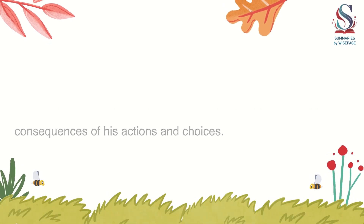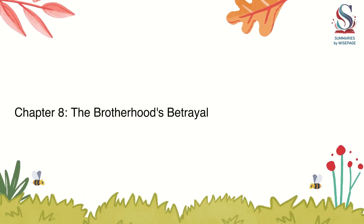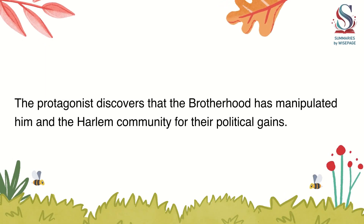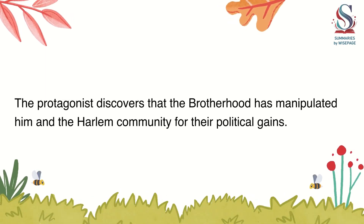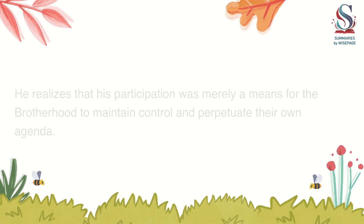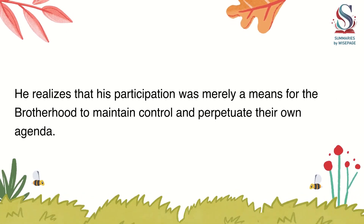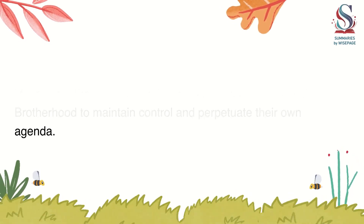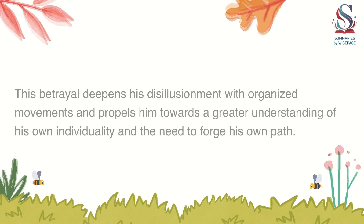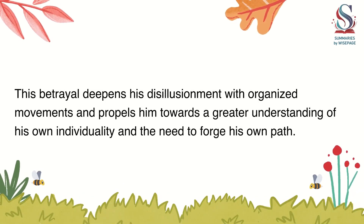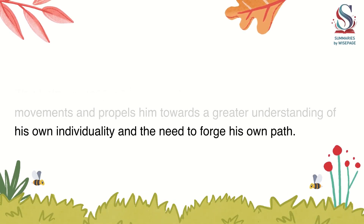Chapter 8: The Brotherhood's Betrayal. The protagonist discovers that the Brotherhood has manipulated him and the Harlem community for their political gains. He realizes that his participation was merely a means for the Brotherhood to maintain control and perpetuate their own agenda. This betrayal deepens his disillusionment with organized movements and propels him towards a greater understanding of his own individuality and the need to forge his own path.